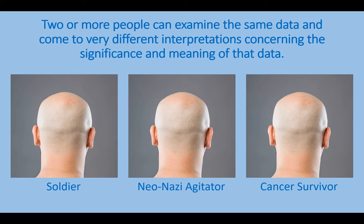Let's look at this example. We have three identical pictures of the same man with no hair — all three pictures are of a bald man. But when you look at a bald man, what do you think of? Do you think he is a soldier? Do you think that man is a neo-Nazi agitator? Or do you think he's a cancer survivor? This example shows how different people can look at the same information, the same data, and come to radically different conclusions.